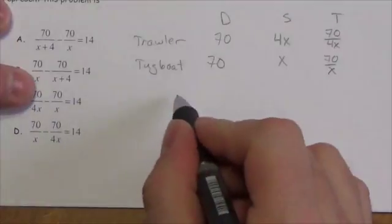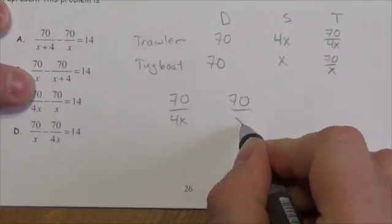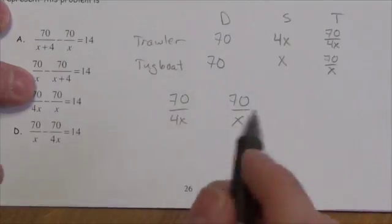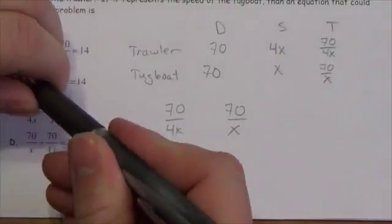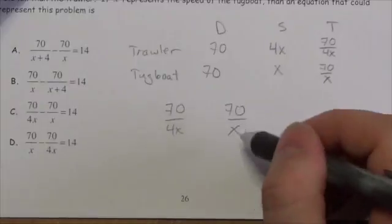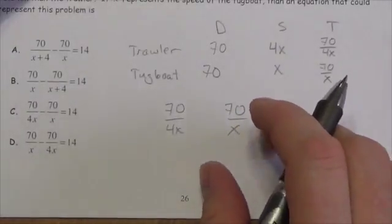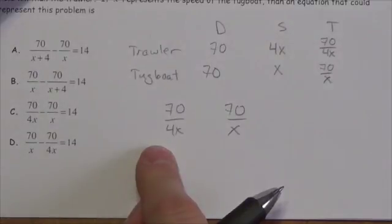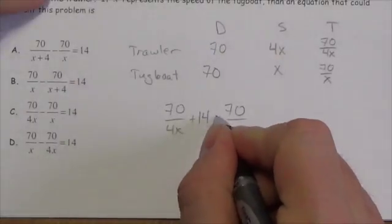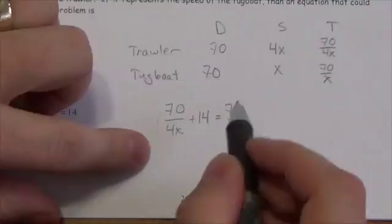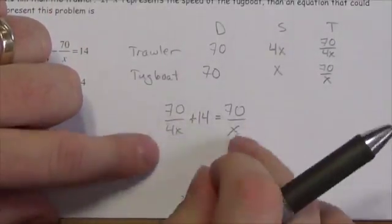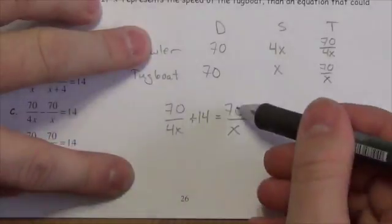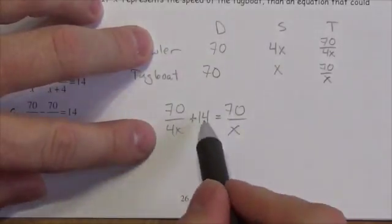Now set up the equation. 70 over 4x and 70 over x are not equal — we need to add 14 to one side. The tugboat goes slower so it takes more time automatically. The trawler gets there fast and has to wait 14 hours. We can also see this from the expressions: 70 over 4x has a larger denominator so it's a smaller value; 70 over x is larger. So add 14 to the smaller value: 70 over 4x plus 14 equals 70 over x.